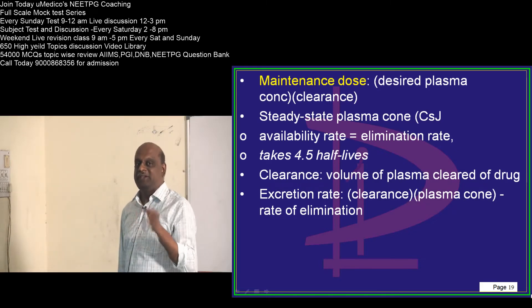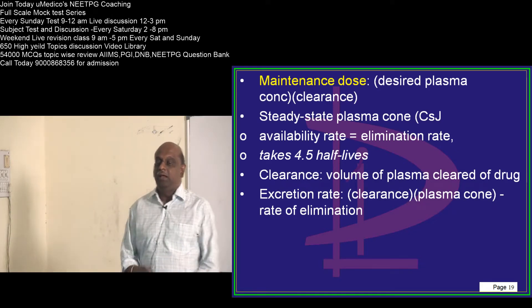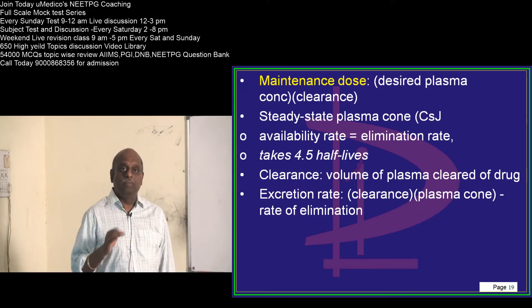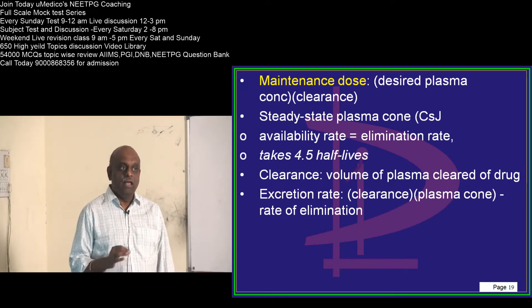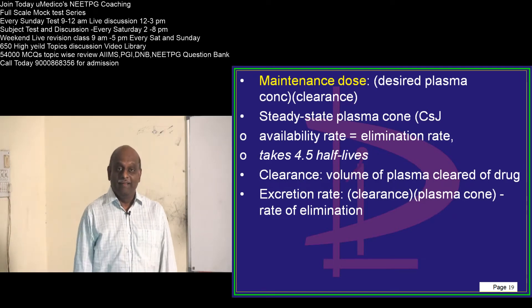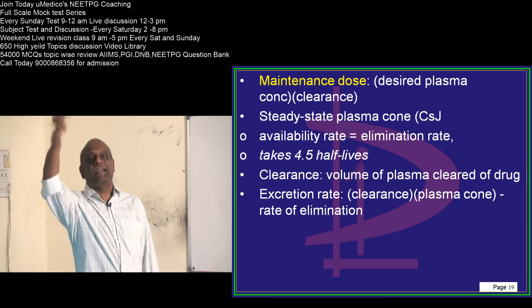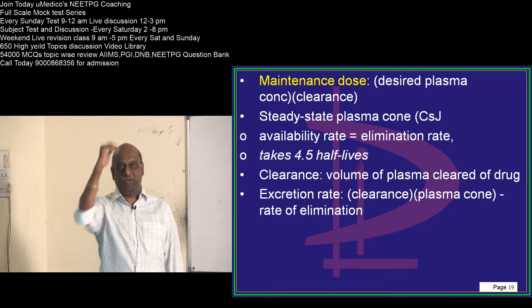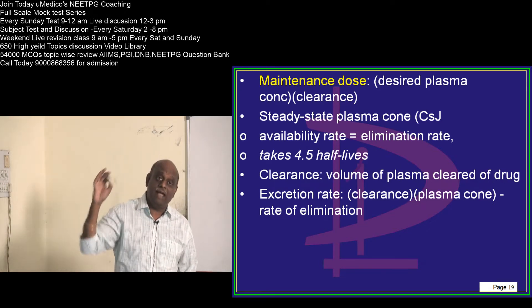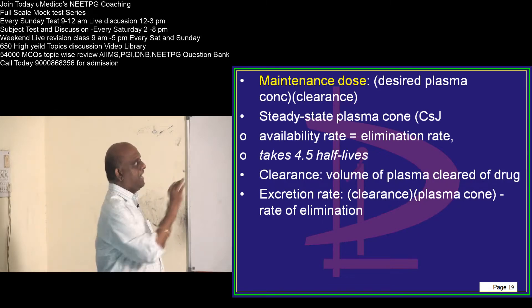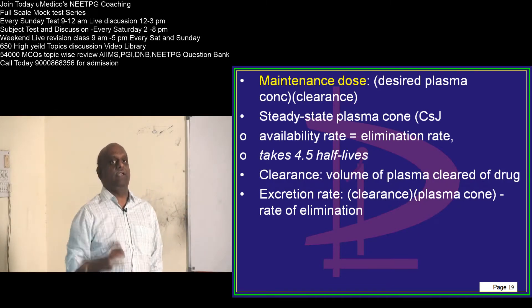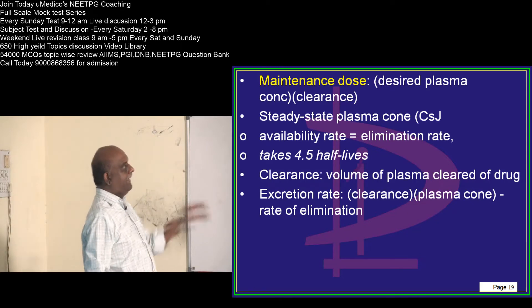The examiner's favorite question is: after how many half-lives will a drug reach the steady-state concentration? The answer is 4.5 half-lives. That is the number you need to remember.